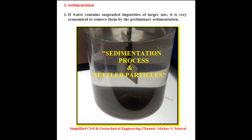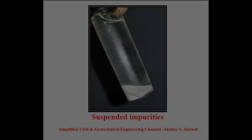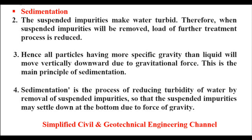If water contains suspended impurities of larger size, it is very economical to remove them by preliminary sedimentation. If the suspended impurities can be removed, then water purification process becomes easier. This picture shows the sedimentation process and settled particles. This picture shows suspended impurities. The suspended impurities make water turbid; therefore when suspended impurities are removed, the load of further treatment process is reduced.